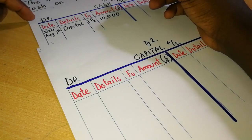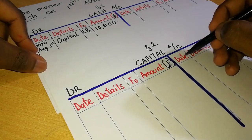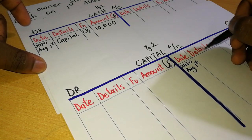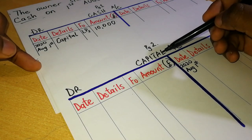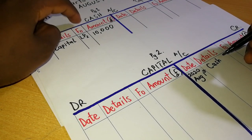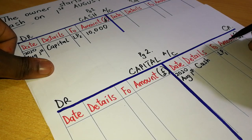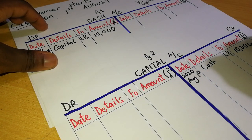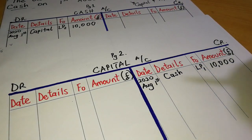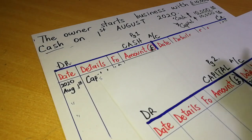Having debited cash, we now go to the capital account on page two and record the transaction: date 2020 August 1st, details 'cash' — the other account affected — folio ledger page one, amount ten thousand. This credit entry on the capital account corresponds to the debit on the cash account. The double entry for this transaction is now complete.